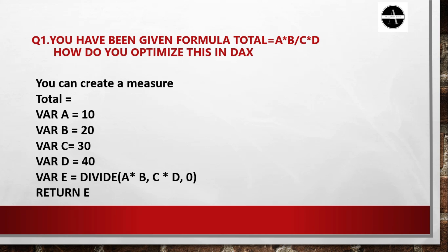Here we are going to create a simple measure using a variable function. You can create a measure like total is equal to — we will create a variable for each letter. For variable A, we have given a value of 10; for B, 20; for C, 30; and for D, 40. Then we create a new variable E, which uses the DIVIDE function. The DIVIDE function performs a division and returns a result. It contains three parameters: numerator, denominator, and an optional alternate value, which returns blank on division by zero.